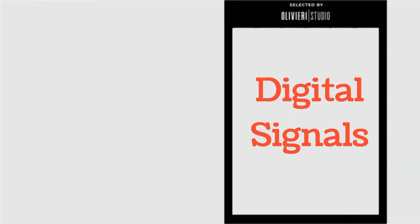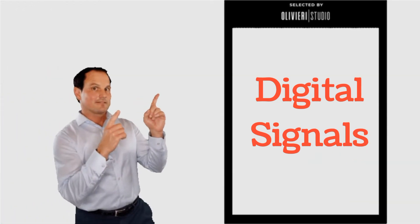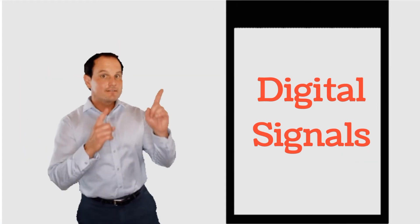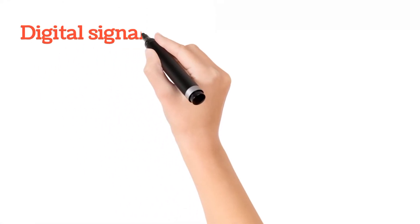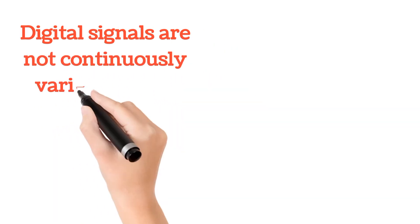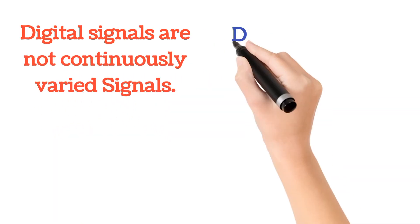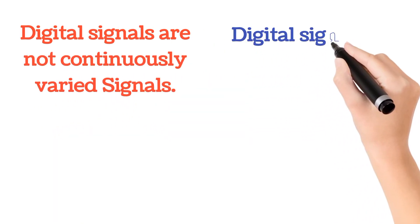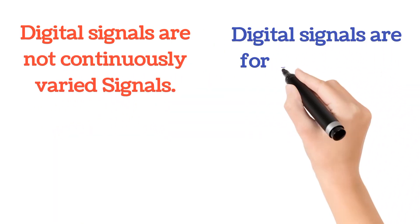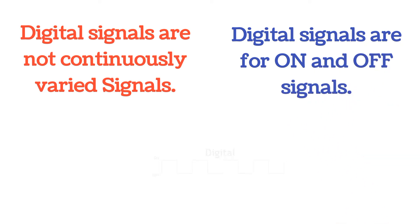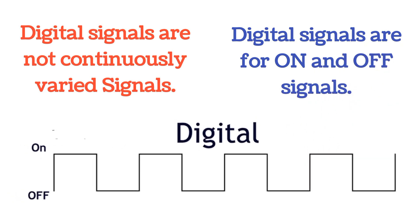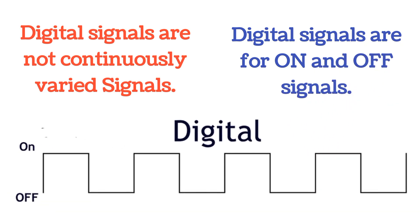Digital signals are not continuously varying signals. Digital signals represent ON and OFF states only. As shown in the image, a digital signal is simply ON or OFF with no value in between.